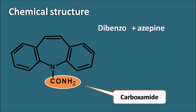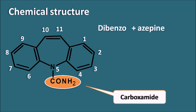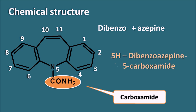So the ring system in carbamazepine is the dibenzo azepine. Numbering starts for this ring system giving the least number to the nitrogen — one, two, three, four, five — so the nitrogen is at position five. Numbering continues from six to eleven. Carbamazepine has nitrogen at the fifth position as well as a carboxamide group at the fifth position, so its name is 5H-dibenzo azepine-5-carboxamide.